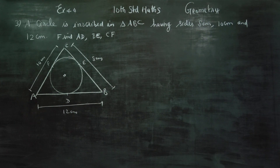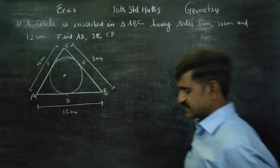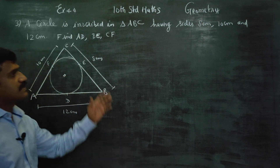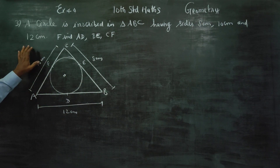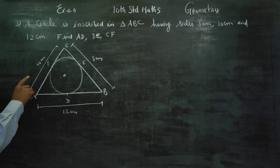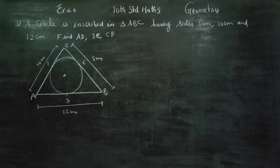Dear 10th standard students, in Exercise 4.4, Sum number 3: a circle is inscribed in triangle ABC having sides 8 cm, 10 cm, and 12 cm. Find AD, BE, and CF.